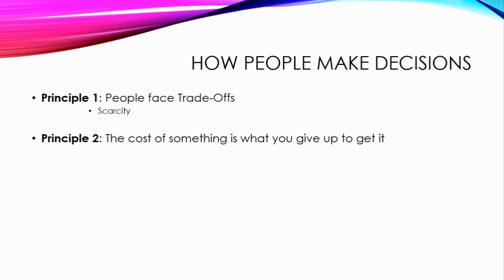Principle 2: the cost of something is what you give up to get it. Because we face trade-offs, we must make good decisions by choosing the best among all options — this results in opportunity costs. The opportunity cost of an item is the cost or benefit of the best alternative forgone. It shouldn't be confused with trade-offs: the trade-off is the item (say, the geography) you have forgone to watch this tutorial, whilst opportunity cost is the geography knowledge you would have gained.